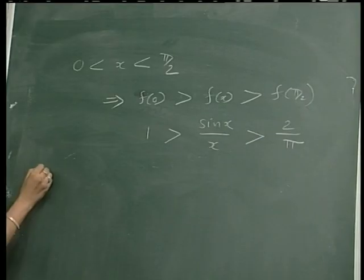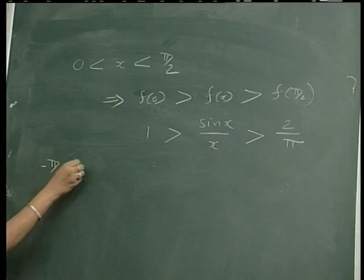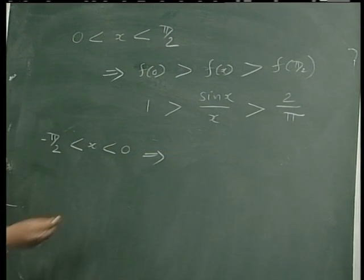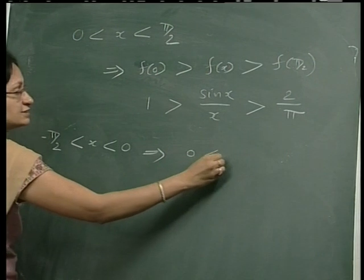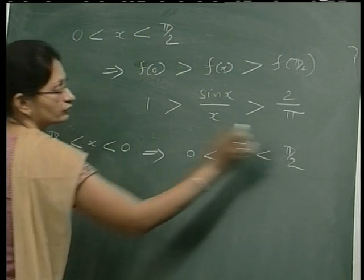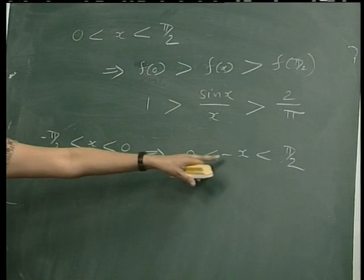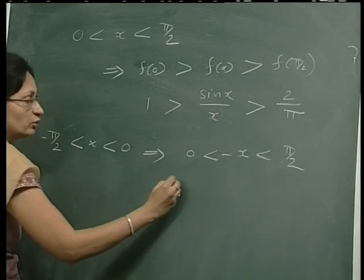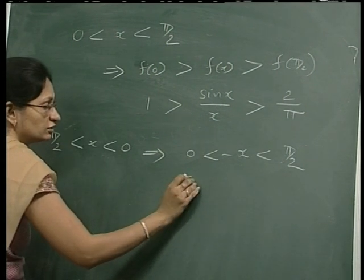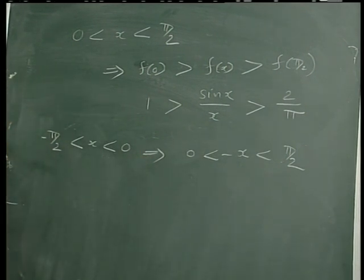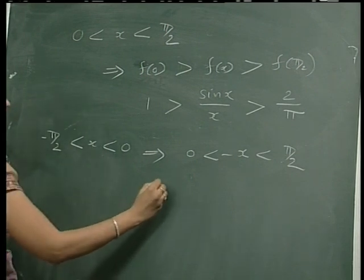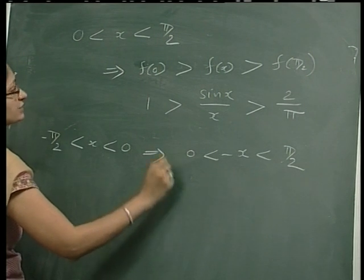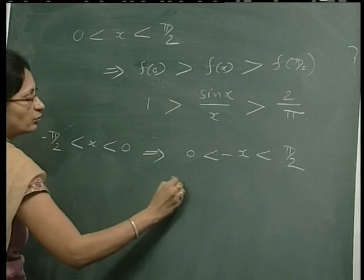Now to prove the result for the interval −π/2 < x < 0: this implies 0 < −x < π/2, so −x is between 0 and π/2. We apply the above result to −x, and since sin(−x)/(−x) = sin(x)/x, we get that 2/π ≤ sin(x)/x < 1 holds for this range as well. Therefore the result is proved for 0 < |x| < π/2.